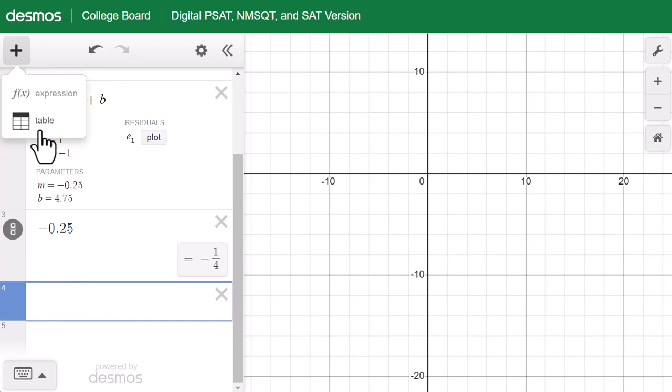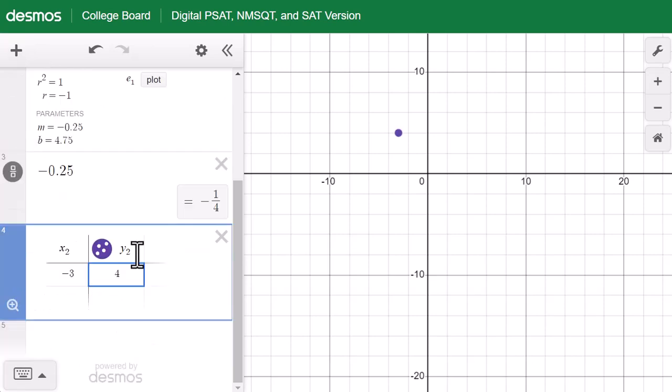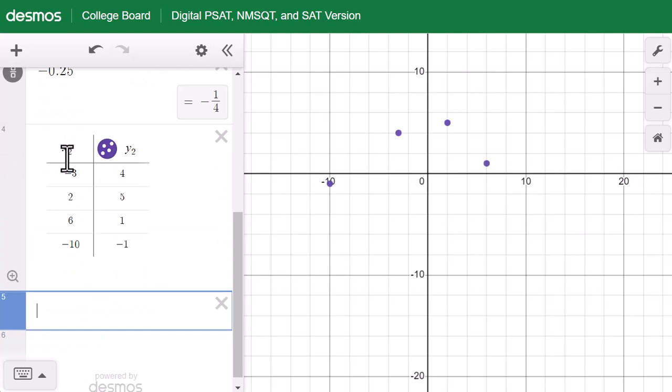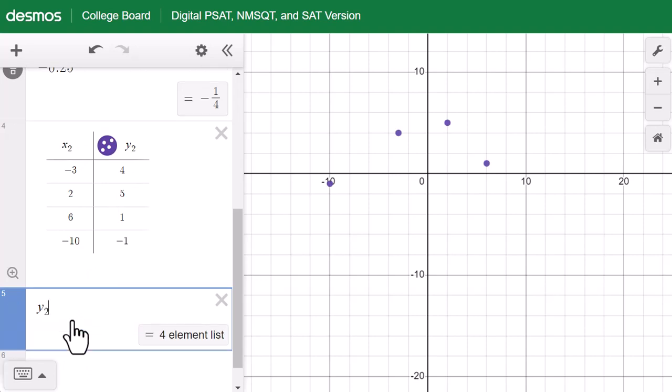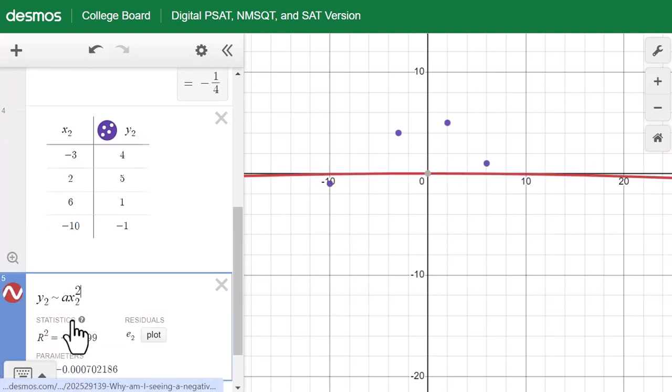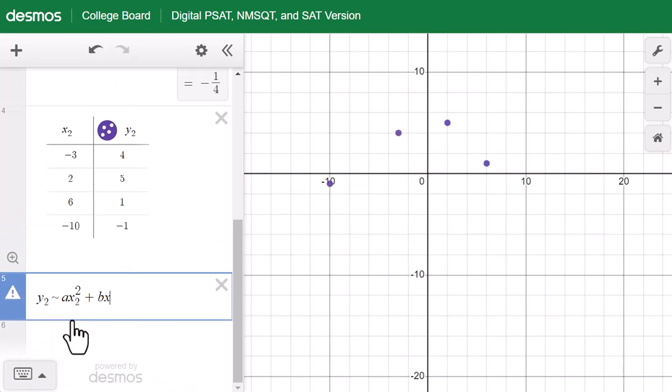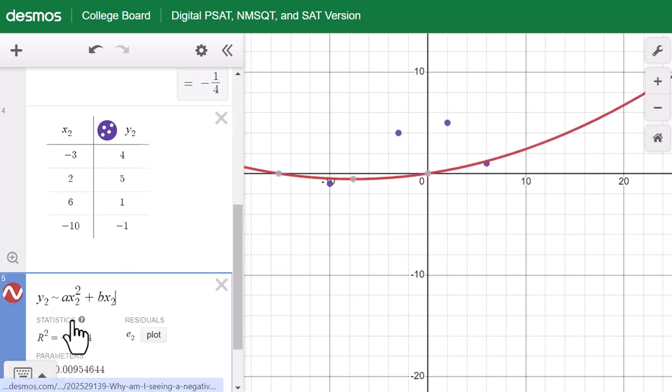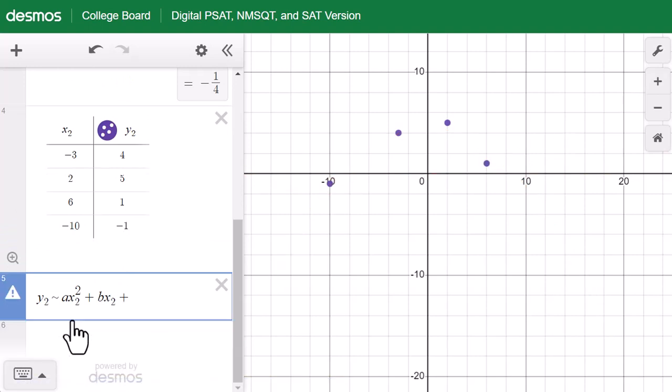Add table. Type in the data. The table is dealing with x2, y2. So you will type in y2 is the approximate to ax2 square plus bx2 plus c.